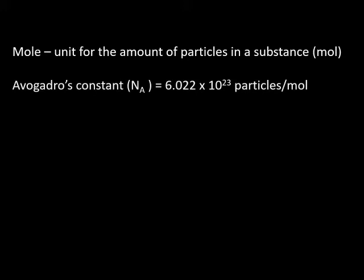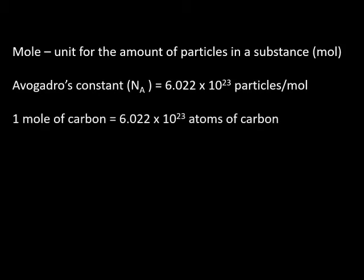This is where the mole really comes into its own. The unit we use is Avogadro's constant, which is the number of particles per mole: 6.022 times 10 to the 23. Avogadro is credited with first discovering this quantity — we've since added quite a few more decimal places in terms of precision. However, we're just going to use 6.022 times 10 to the 23. So if I have a mole of carbon atoms, I have 6.022 times 10 to the 23 atoms of carbon.